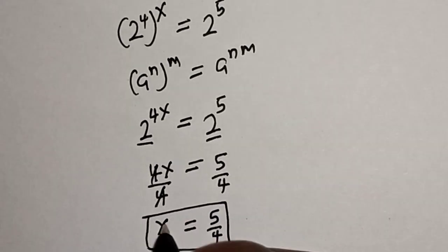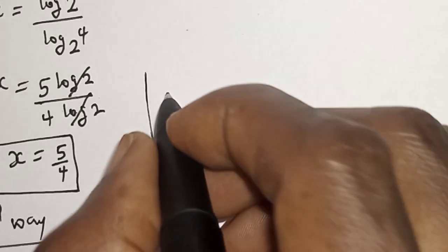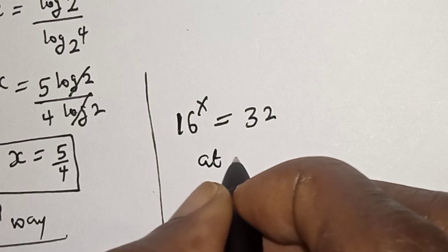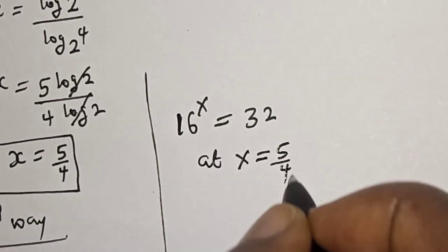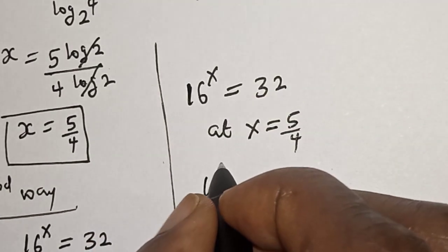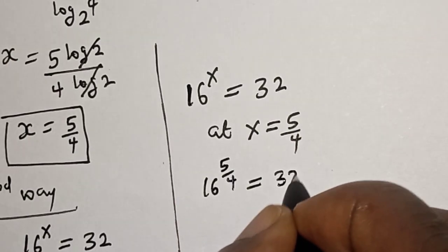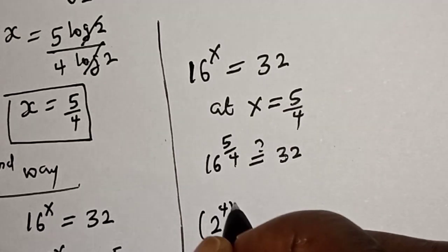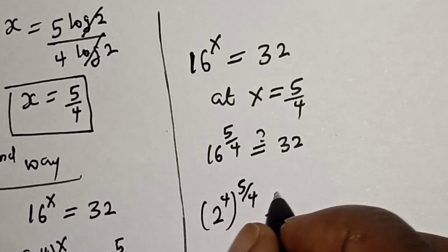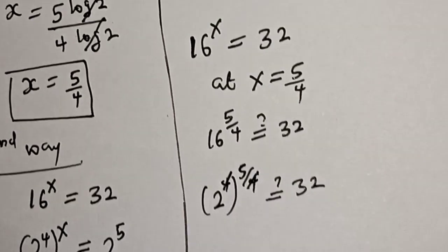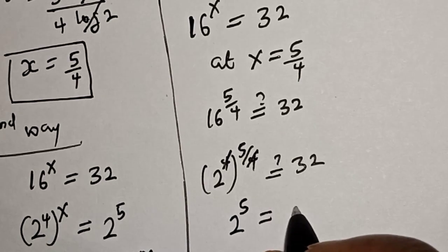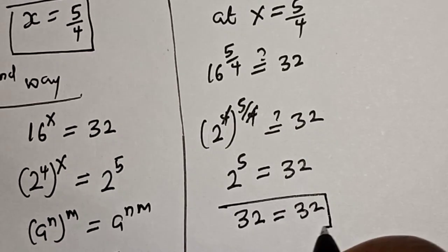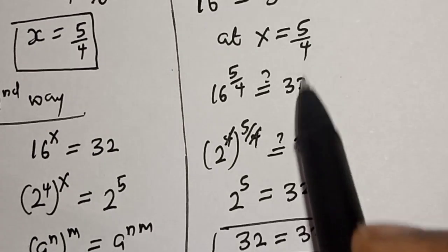We can check to confirm if our answer is correct. Given the equation 16 raised to power s is equal to 32, substituting s equal to 5 over 4 gives 16 raised to power 5 over 4. Rewriting 16 as 2 raised to power 4, raised to power 5 over 4, the 4s cancel, giving 2 raised to power 5, which equals 32. The left-hand side equals the right-hand side, confirming s equal to 5 over 4 satisfies the equation.